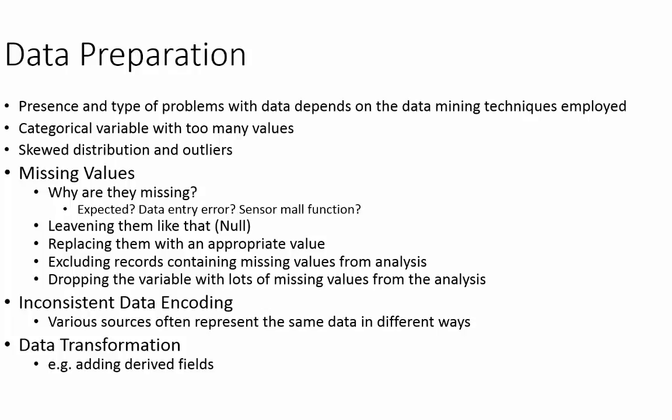There are different strategies for handling missing values. You can leave them as-is, which works for some techniques. You can replace them with an appropriate value — such as the average, or a value derived from another variable. If it's a derived variable calculated from other variables via a formula, you might be able to estimate a semi-accurate value from that formula.